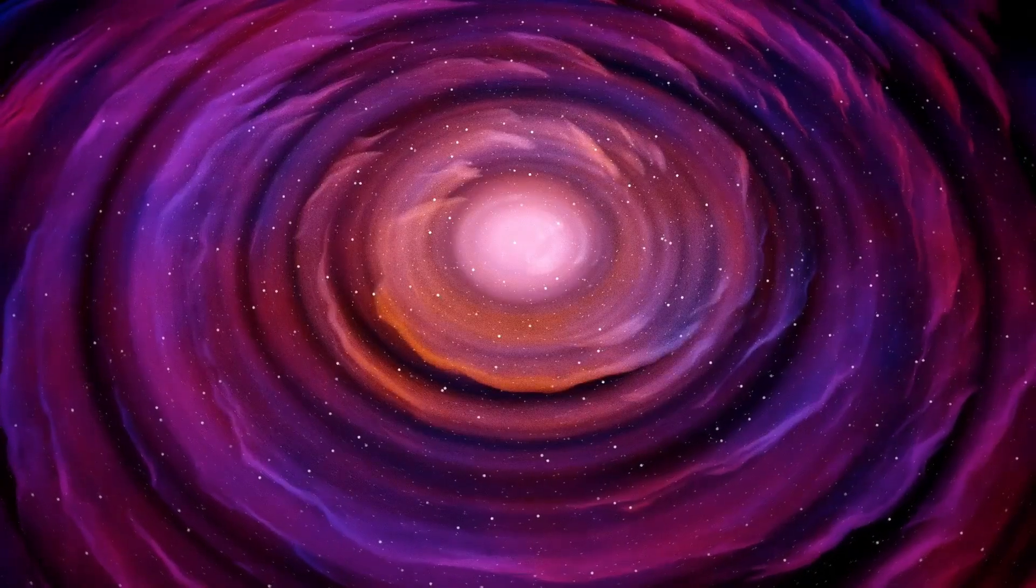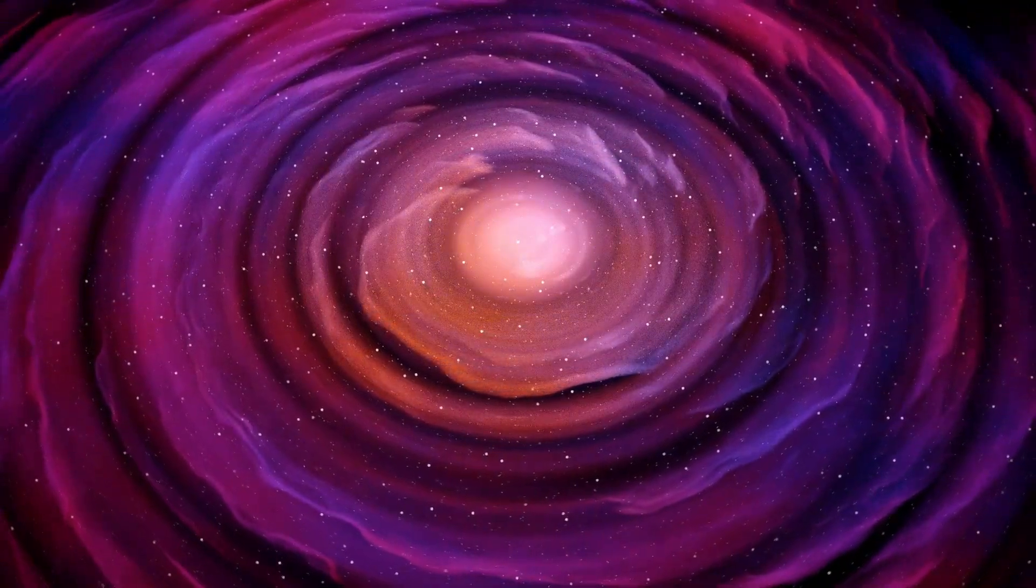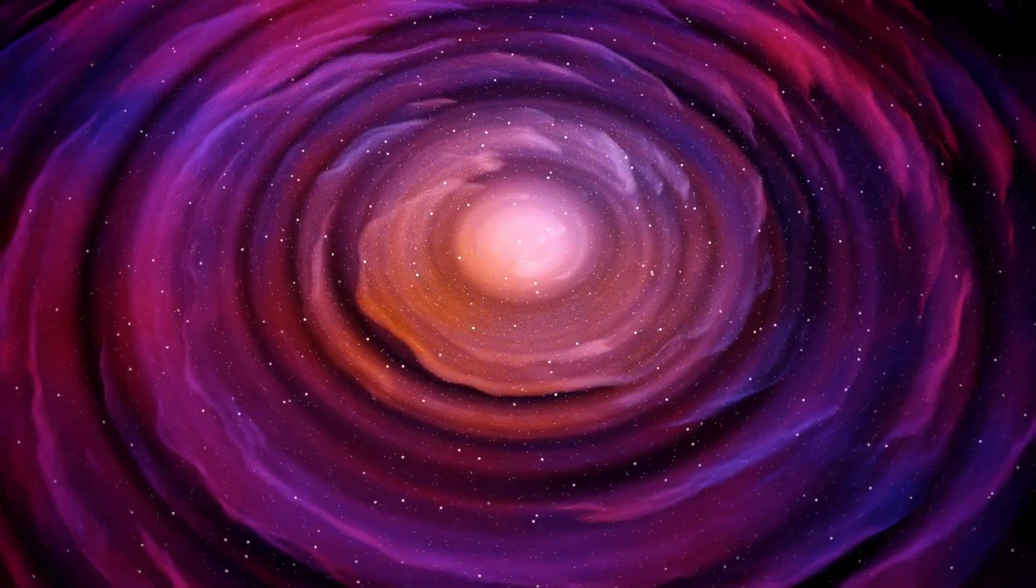Can you imagine a single star dwarfing our entire solar system? To provide some perspective on the sheer enormity of Betelgeuse, if it took the place of our sun, its edges would extend all the way to Jupiter.